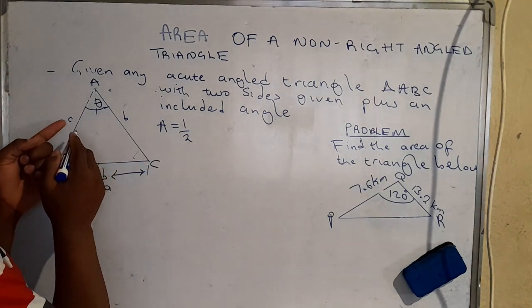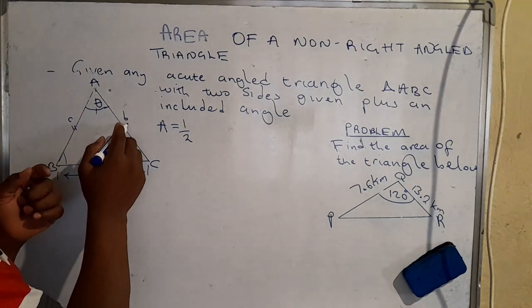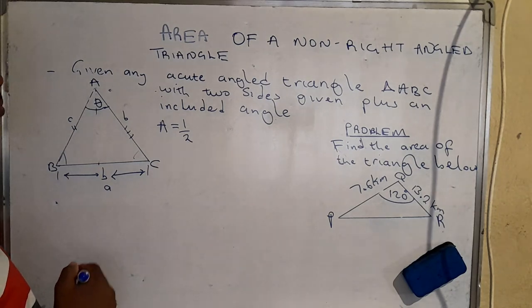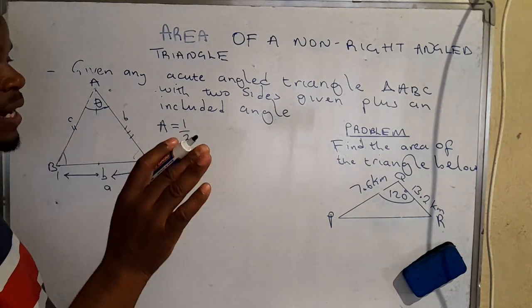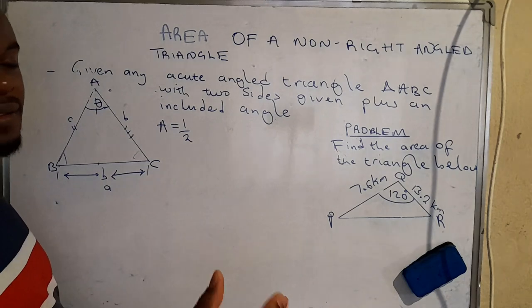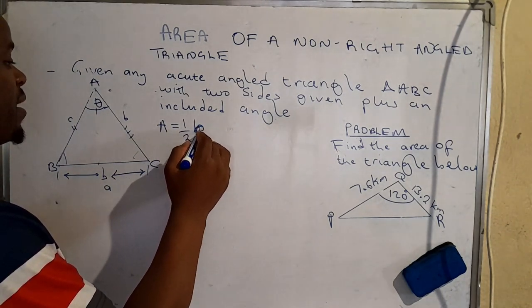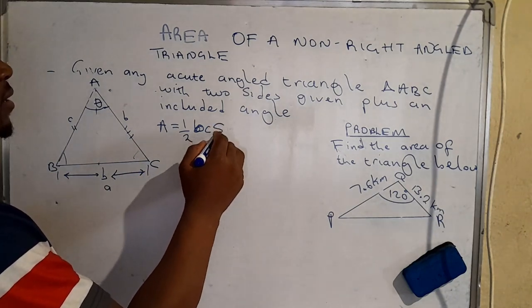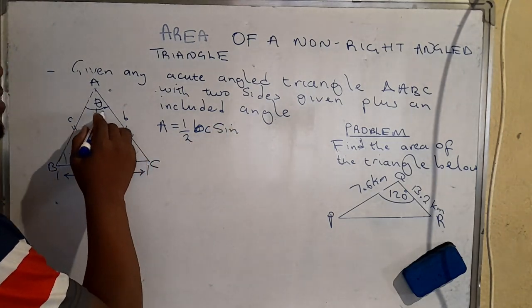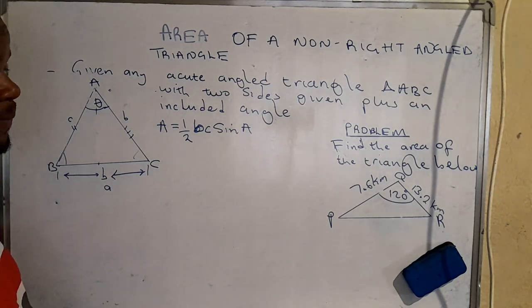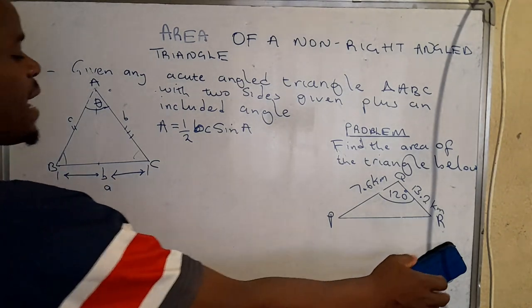have been given. So we take it that this side has been given, that one as well has been given. So we're going to find the values of the sides or the lengths of the sides which have been given, that is b, c, times sine the angle which is sine A, that's the angle.